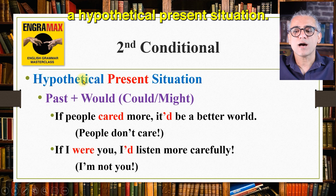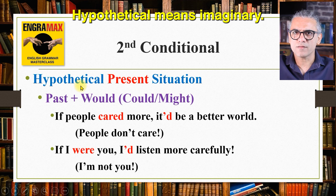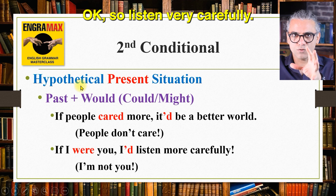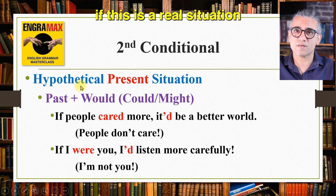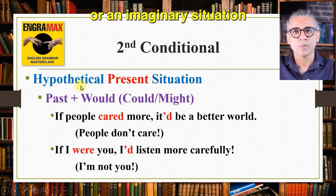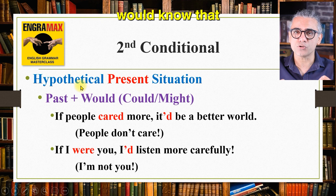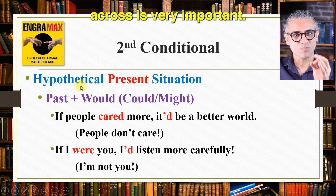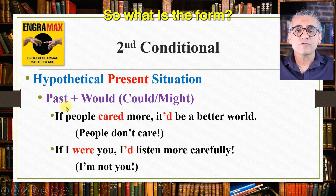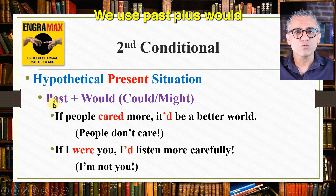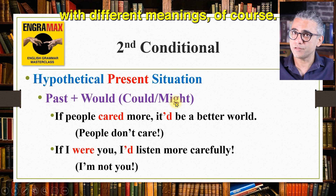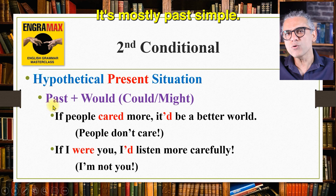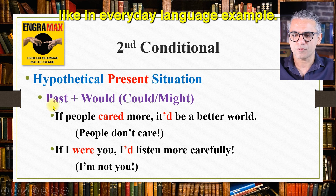The second conditional describes a hypothetical present situation. Hypothetical means imaginary — it means unreal. This distinction is very important. When you use a second conditional, the person listening to you would know you are talking about an unreal situation, so the message you are sending across is very important. The structure uses past plus would, could, or might — with different meanings of course. When we say 'past', it could be past simple or past continuous.